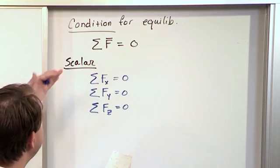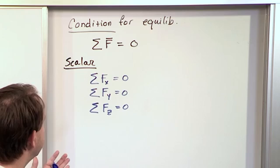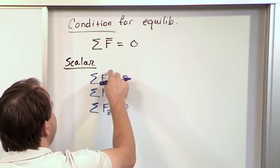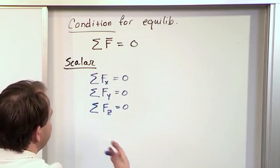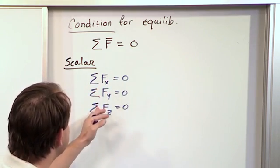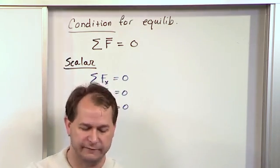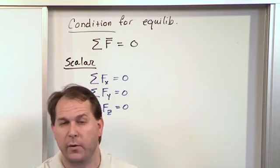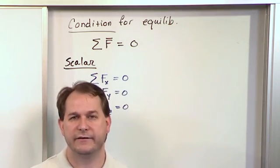So the extension from two dimensions to three dimensions is exactly what you might expect. Notice there's no vector bars here because now we're dealing with scalar quantities. You still have to keep track of signs, and we still use the same sign convention: positive x that way, positive y up, and so on.